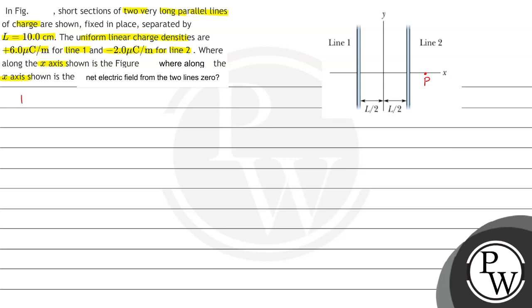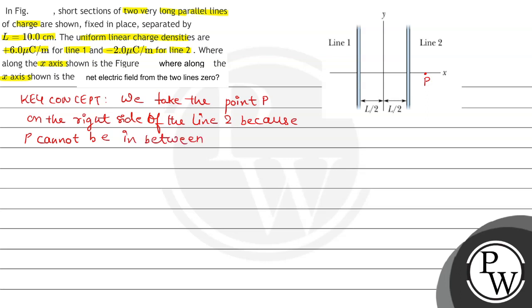The key concept is we take the point P on the right side of line 2, because P cannot be in between the lines as the net electric field is not zero at that place.